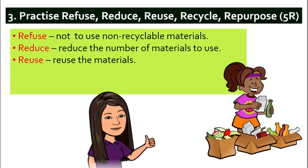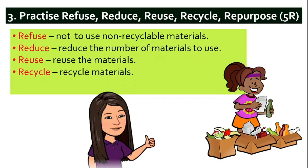Third, reuse — we can use materials again. For example, more and more people are now bringing their own reusable straws to restaurants. After they use it, they wash it and clean it so that it can be used again. Number four, recycle — like this little girl here. We can organize our trash, arranging bottles in one place, paper in another box, and food waste separately, so that these materials can be recycled.